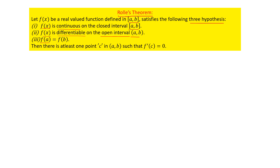If all three conditions are satisfied by the given function, then there should be at least one point c in the interval (a, b) such that the first derivative at point c equals zero, that is f'(c) = 0.